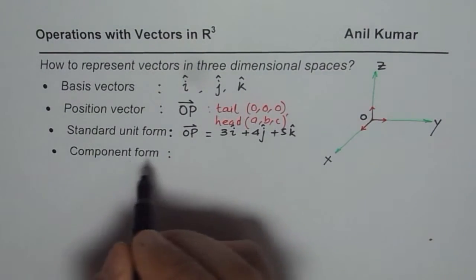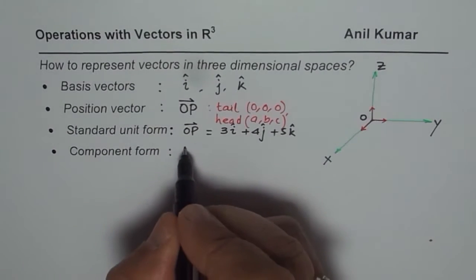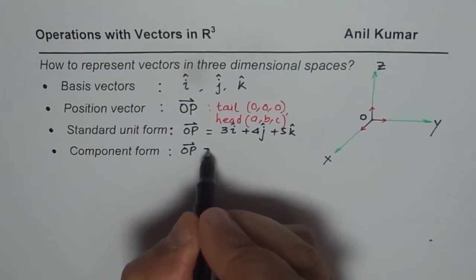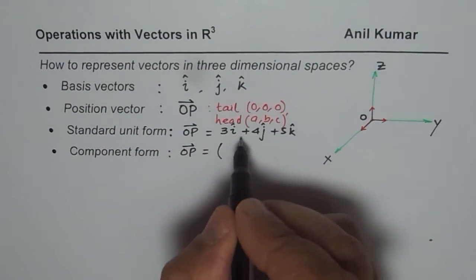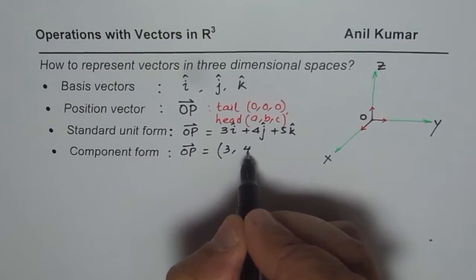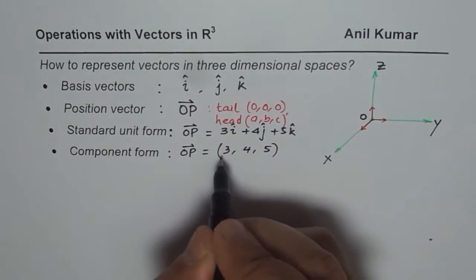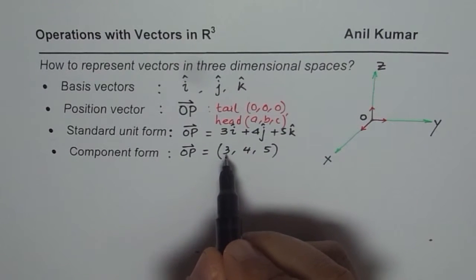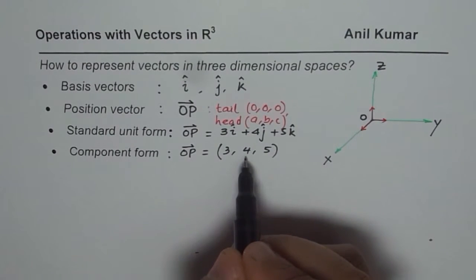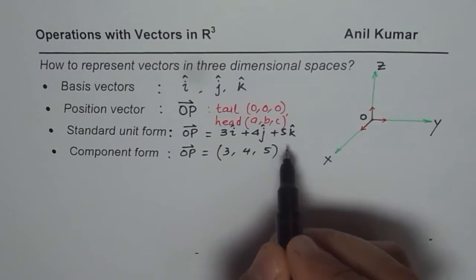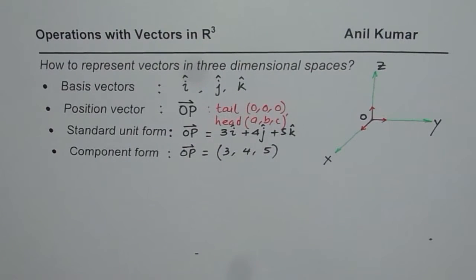The same vector could be written in component form. I could write the same vector OP as equal to components 3, 4, and 5. This means the component along X axis is 3, along Y axis is 4, and along Z axis is 5.